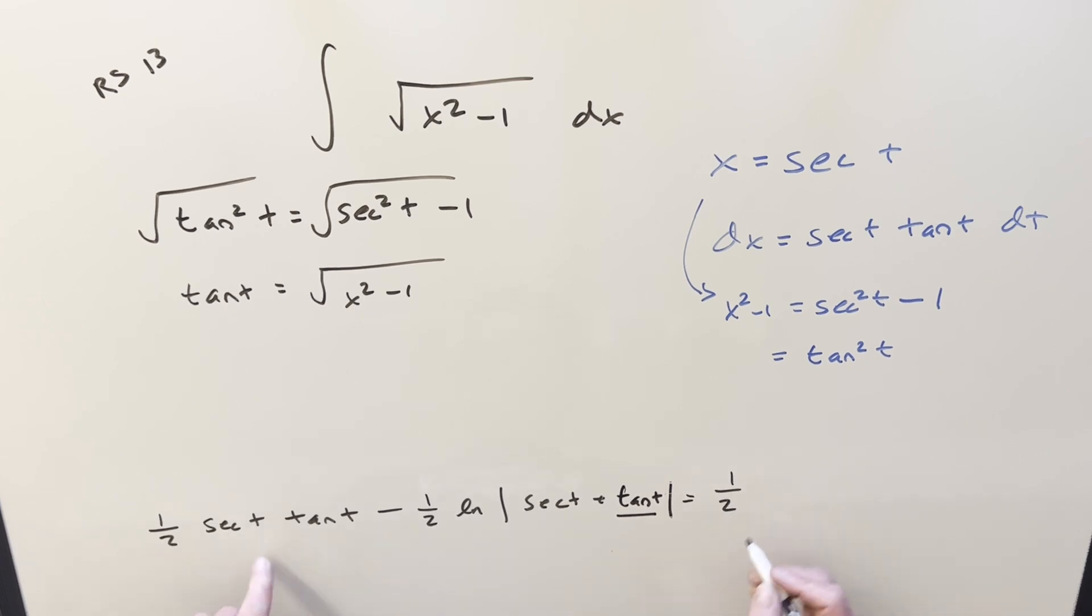So we have 1 half, secant is going to be x. Tan is going to be square root x squared minus 1. Let's see if I can squeeze this all in. We've got minus 1 half natural log. Then we're going to have an x plus square root x squared minus 1. Again, secant is going to be x plus square root x squared minus 1. Add a plus c on there, and that's it.